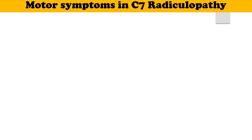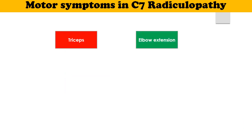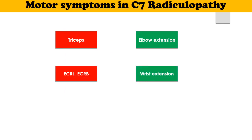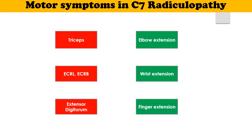The muscles which should be particularly tested in C7 radiculopathy are triceps, assessed by testing elbow extension; extensor carpi radialis longus and brevis, assessed by testing wrist extension; and extensor digitorum, assessed by testing finger extension.